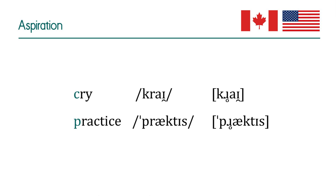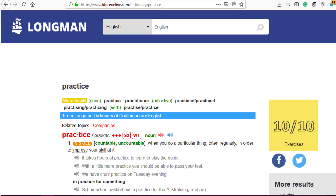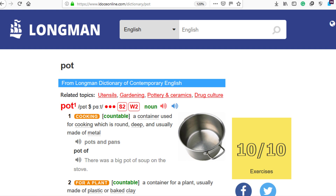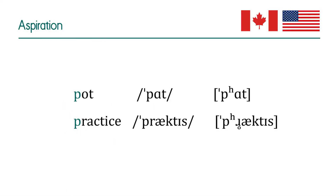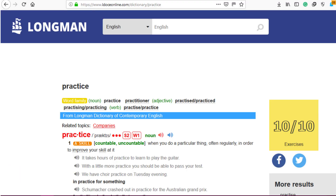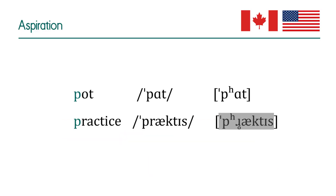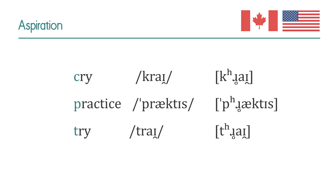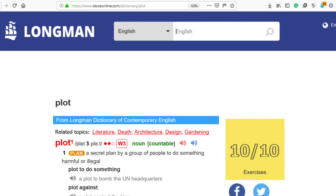But the key point here is that this narrow transcription can become even narrower, because this /p/ is aspirated. Listen: 'practice, practice.' You hear as much aspiration in 'practice' as you hear in 'pot' — based on our previous rule. So it's not 'practice,' it's 'prʰactice.' Let me give you another example: 'try.'